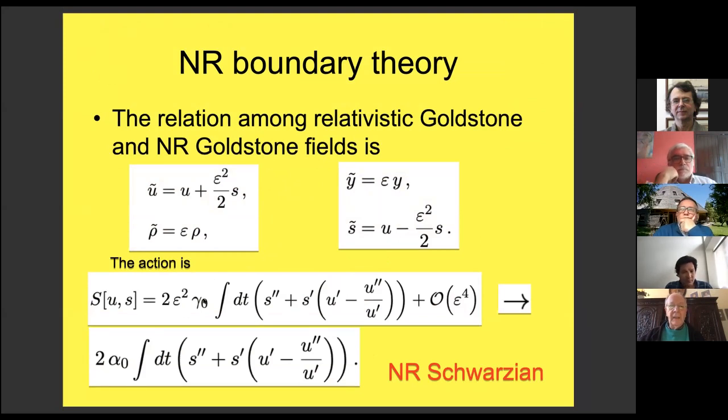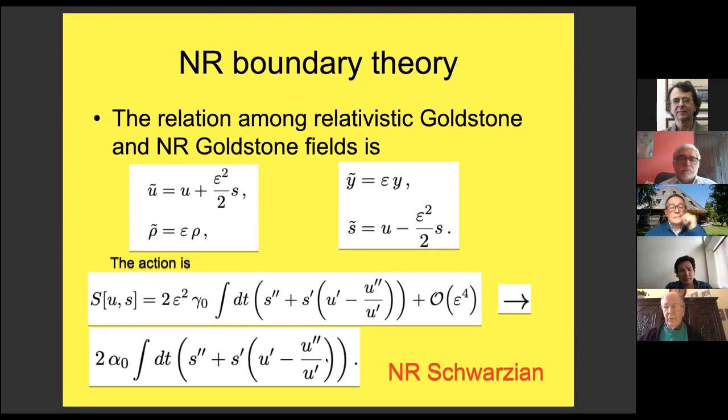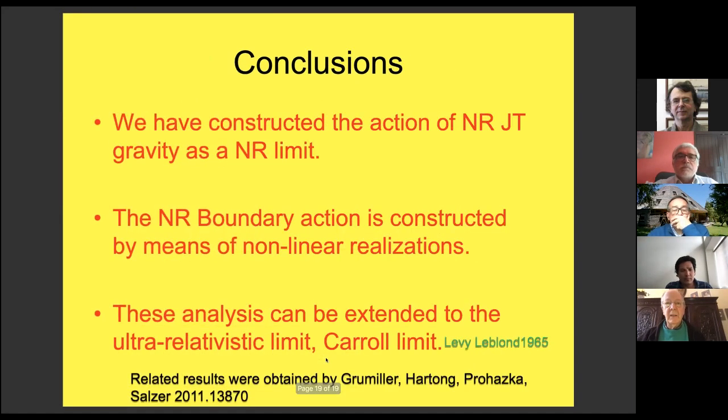One can have a relation among the goldstone field relativistic goldstone fields and the non-relativistic ones with this expansion here. If you plug this in the action and you use that here there were two parameters gamma zero and gamma one, if I impose gamma zero equal to minus one we get this expression. Therefore we immediately see that when epsilon goes to zero if I renormalize gamma zero we get this expression and that will be the non-relativistic Schwarzian version. Therefore we have a complete non-relativistic theory including the Jackiw-Teitelboim at the level of the bulk, at the level of the Schwarzian.